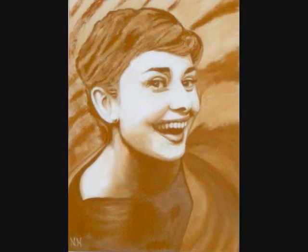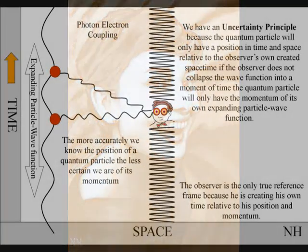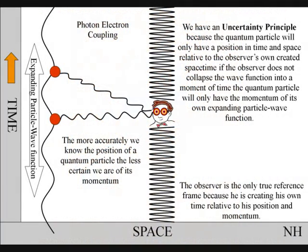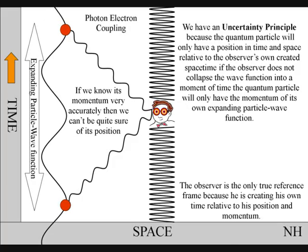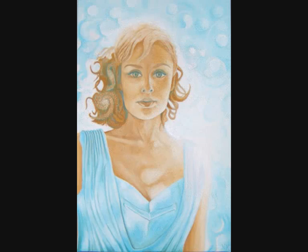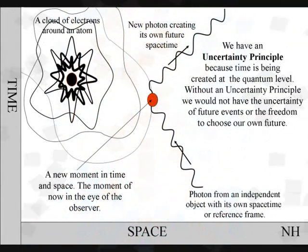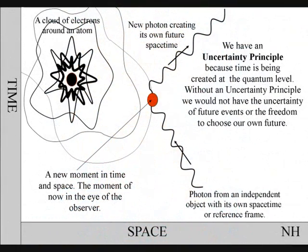Therefore, the more accurately we know the position of a quantum particle, the less certain we are of its momentum. And if we know its momentum very accurately, then we can't be quite sure where it is. This is because to observe the quantum particle, we create a photon-electron coupling, collapsing the particle wave function into a moment of time and space that is part of the observer's own created space-time.